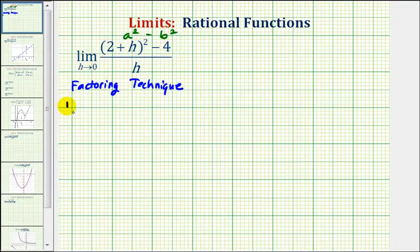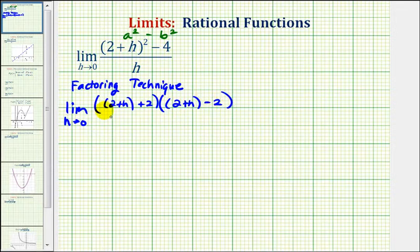So we can write this as the limit as h approaches zero, where one factor would be the quantity two plus h plus two, and the second factor would be the quantity two plus h minus two. Our denominator is still going to be a factor of h.